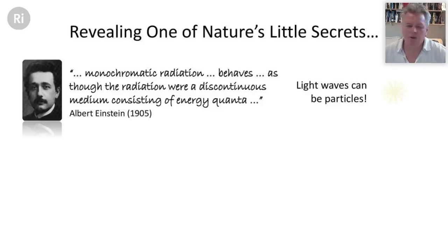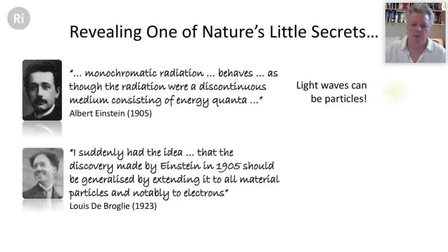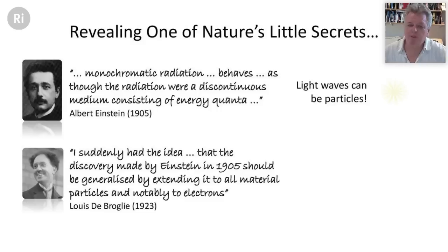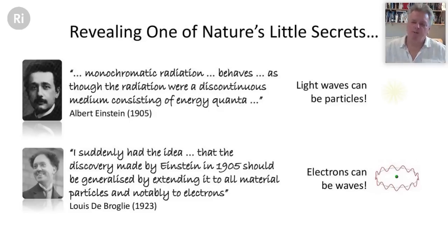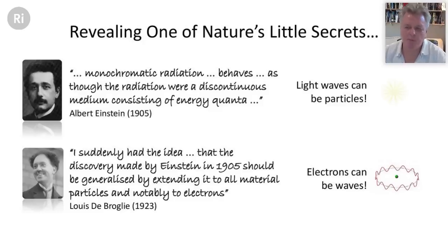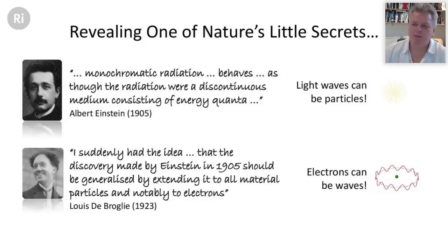In 1923, French physicist Louis de Broglie had the idea that Einstein's 1905 discovery could be generalized by extending it to all material particles, notably electrons. He suggested that aspects of what was being revealed in physics laboratories could be best understood by treating electrons as describable in terms of wave motion. So now we have a peculiar situation: Newton's laws for classical objects, a wave equation for classical waves, but at the level of atoms and subatomic particles things get muddled — light waves can be particles (photons) and electrons can be waves.